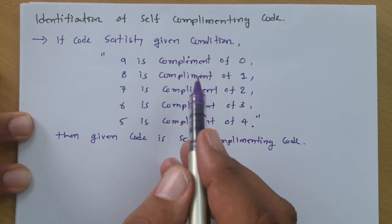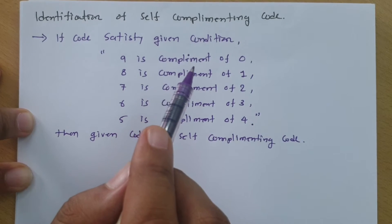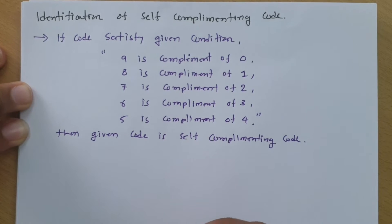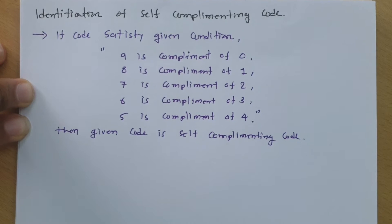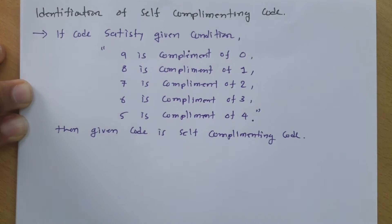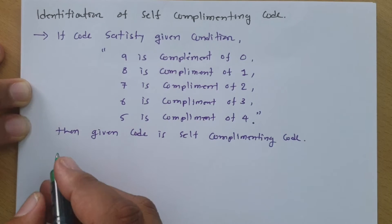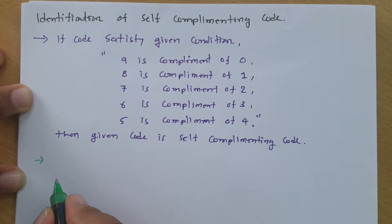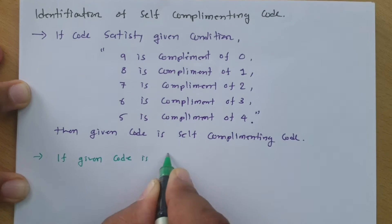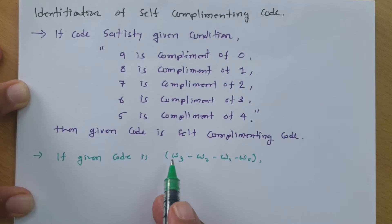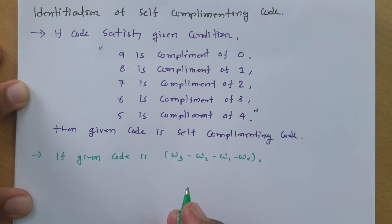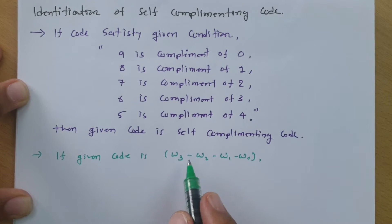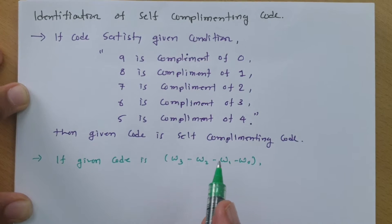It will be a very linear process to identify all those things, as we need to write the complete code and then determine whether it is self-complementing or not. There is one easier way by which we can identify whether a given code is self-complementing. If a given weighted code is given by W3, W2, W1, W0, we need to do addition of all 4 bits and check whether the sum equals 9 or not. If it is equal to 9, we can say the given code is a self-complementing code.